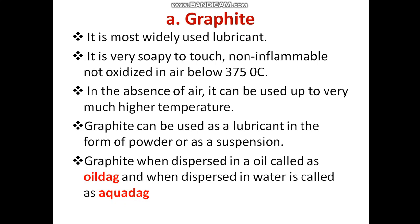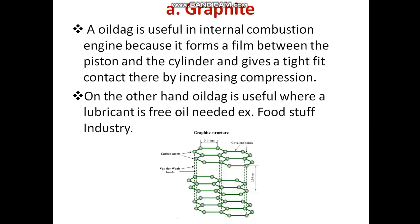Graphite can be mixed with oil or water for use as a suspension. When dispersed in oil it is called oil dag, and when dispersed in water it is called aqua dag. Oil dag is used in internal combustion engines because it forms a film between the piston and the cylinder, giving a tight fit contact and thereby increasing compression. Oil dag is also useful where a lubricant with free oil is needed, for example in the foodstuff industry.